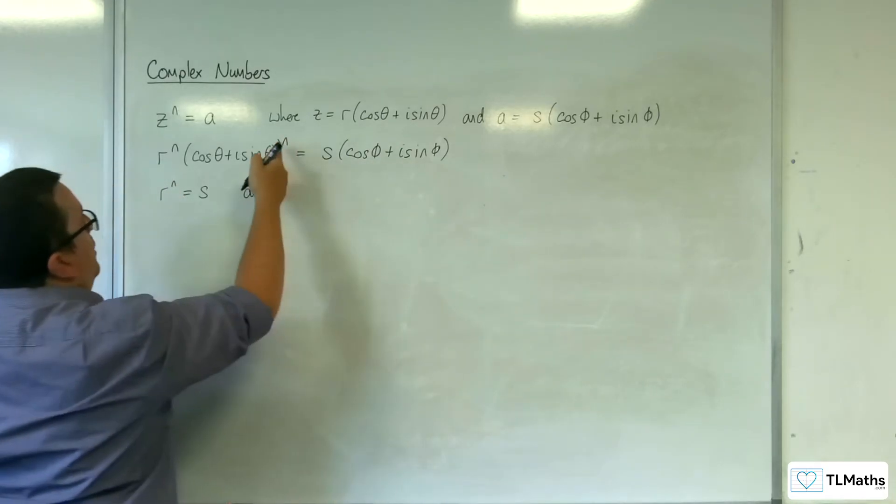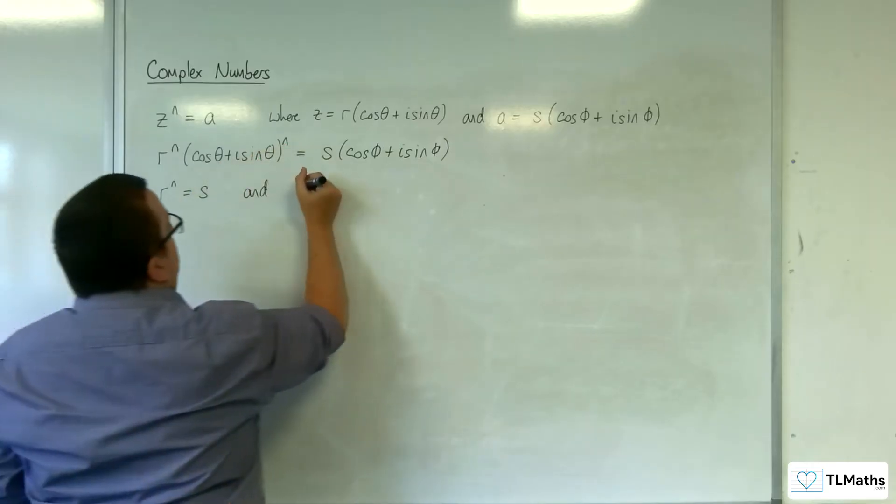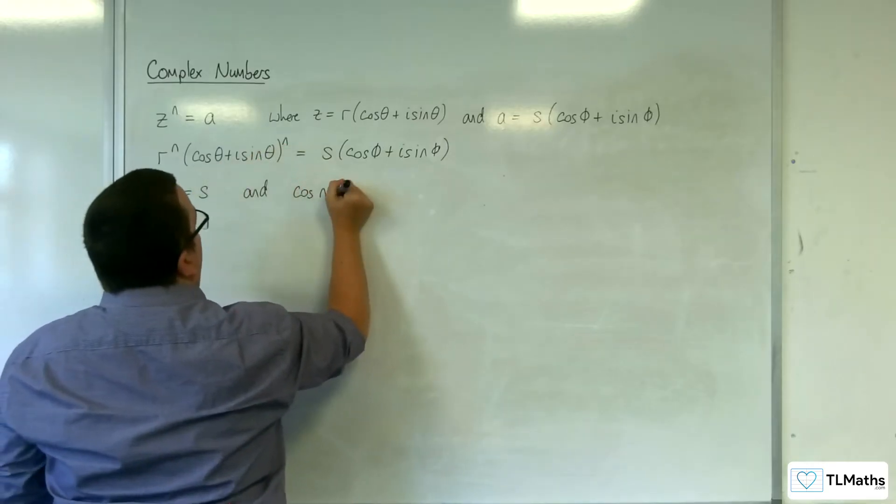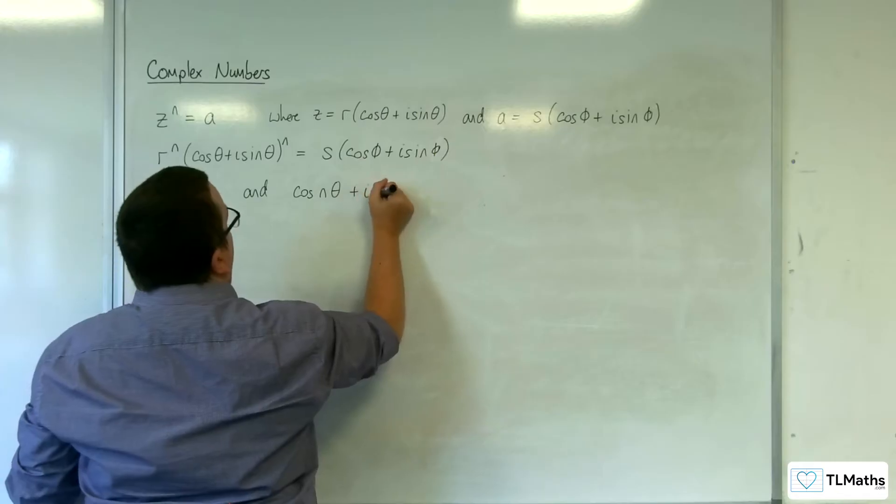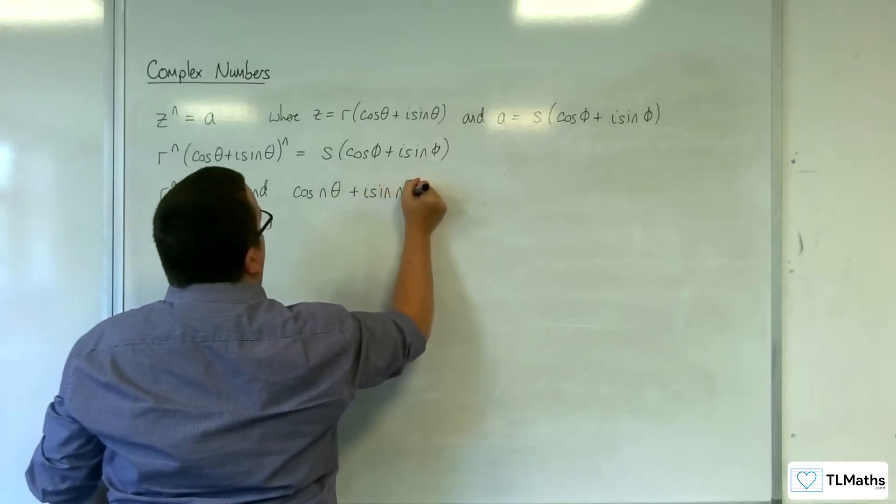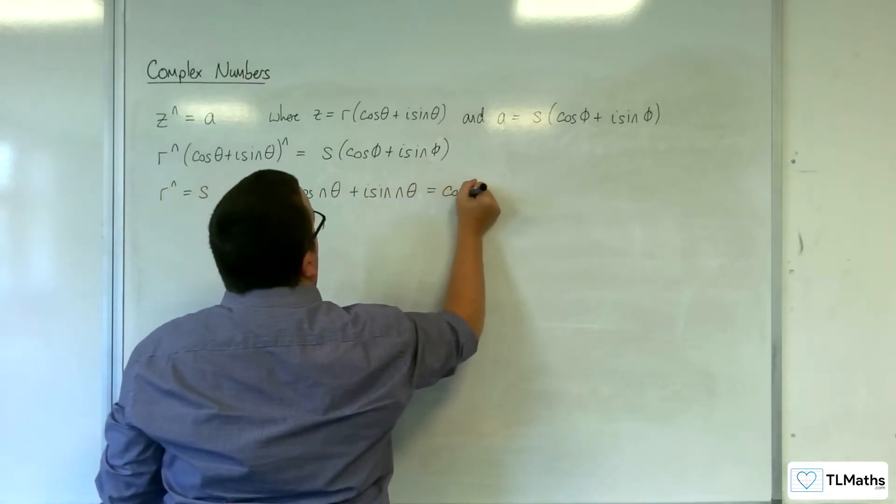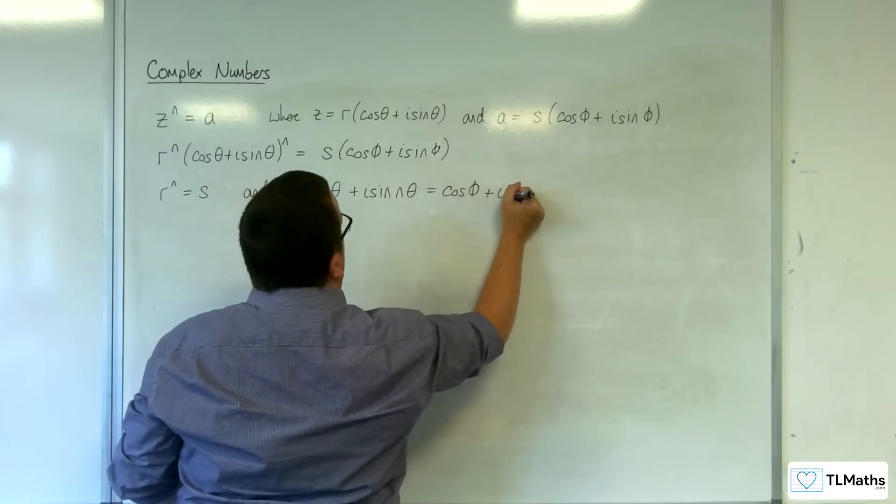Now, using De Moivre's theorem, we can bring that n in and write that as cosine of n theta plus i sine n theta must be equal to cosine of phi plus i sine phi.